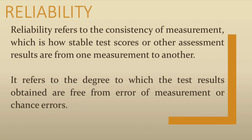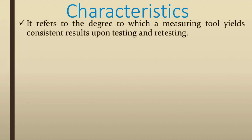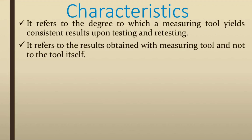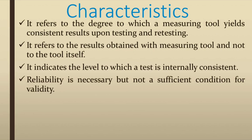Reliability refers to the degree to which test results are free from measurement errors or chance errors — it is the degree of consistency between two measures of the same thing. A reliable tool yields consistent results upon testing and retesting. Importantly, reliability refers to the results obtained with the measuring tool, not to the tool itself. It also indicates the level to which the test is internally consistent — how accurately it measures the characteristic it is expected to measure.